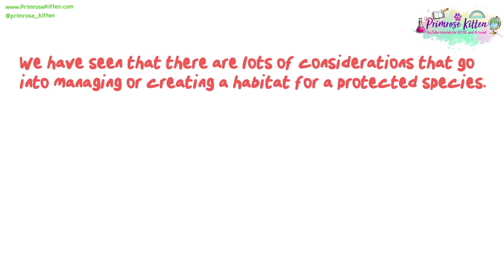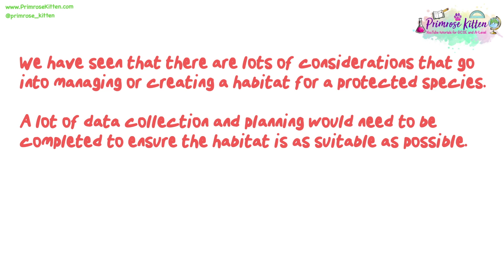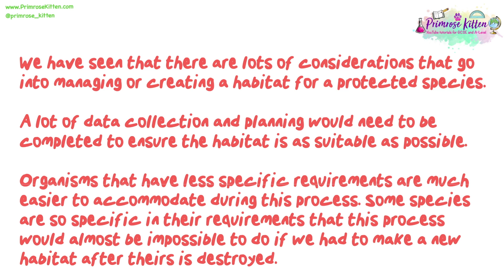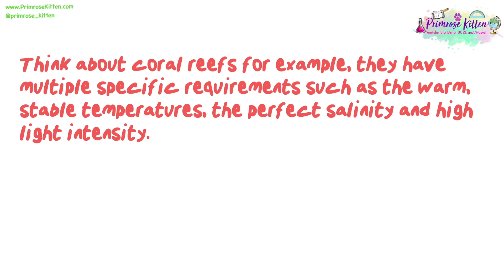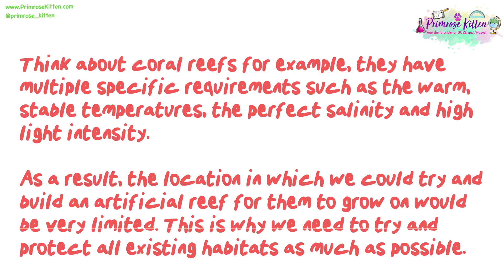There are lots of considerations that go into managing or creating a habitat for a protected species. A lot of data collection and planning would need to be completed to ensure the habitat is as suitable as possible. Organisms that have less specific requirements are much easier to accommodate during this process. Some species are so specific in their requirements that this process would almost be impossible if we had to make a new habitat after theirs is destroyed. Think about coral reefs, for example — they have multiple specific requirements such as warm stable temperatures, the perfect salinity and high light intensity. As a result, the location in which we could try and build an artificial reef would be very limited. This is why we need to try and protect all existing habitats as much as possible.